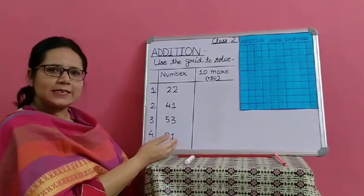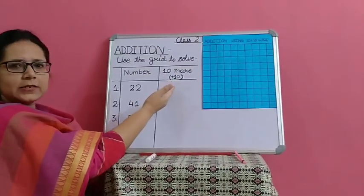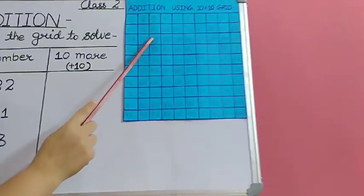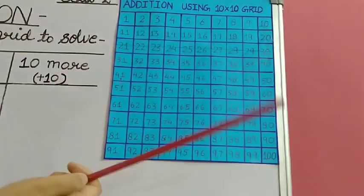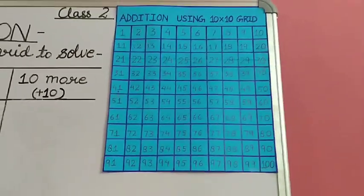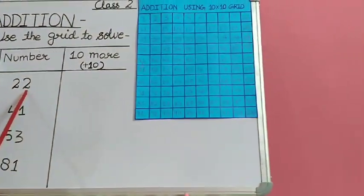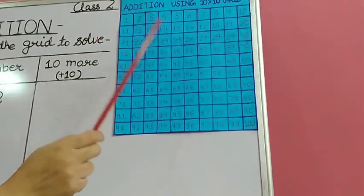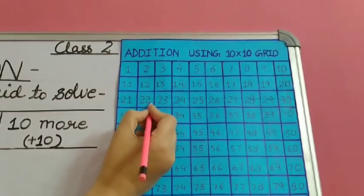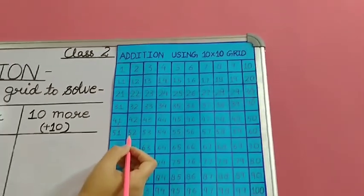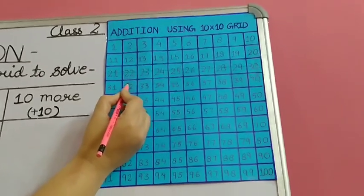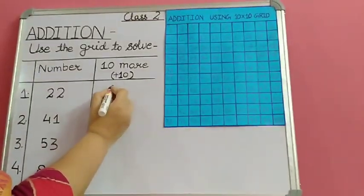Now let's see another exercise. Here we have to write 10 more — we have to add 10. When we have to add 10, we move 1 row down. The number is 22. We will find number 22 on the grid and circle it. We have to add 10, so from 22 we will move 1 row below. We reached 32. The answer is 32.